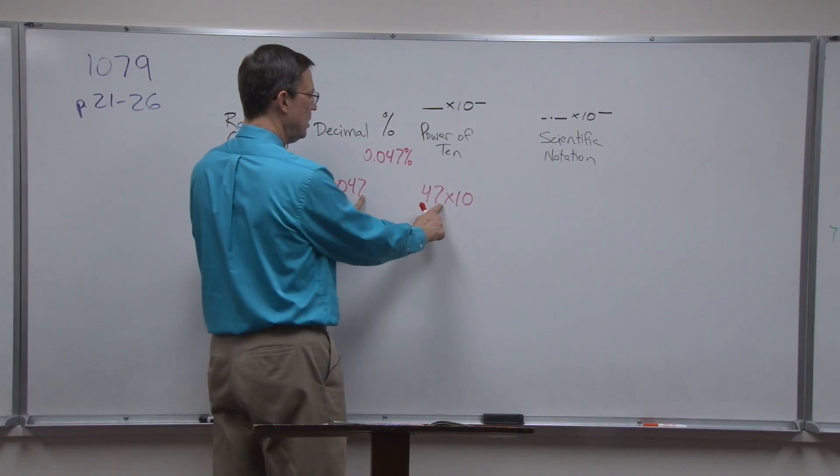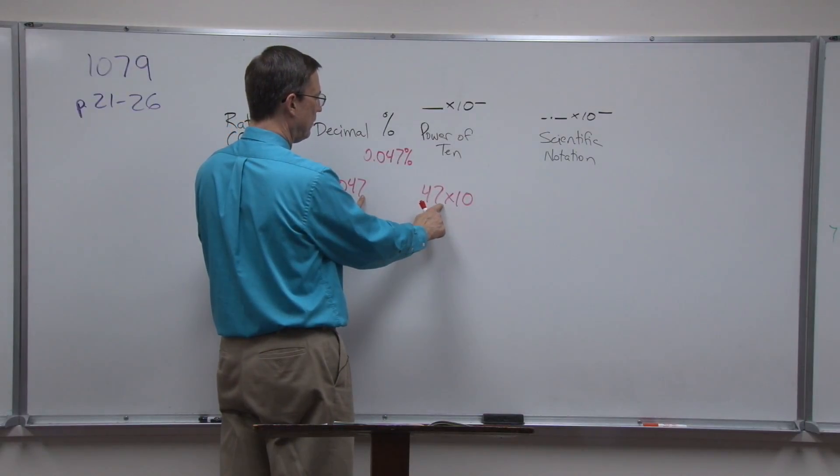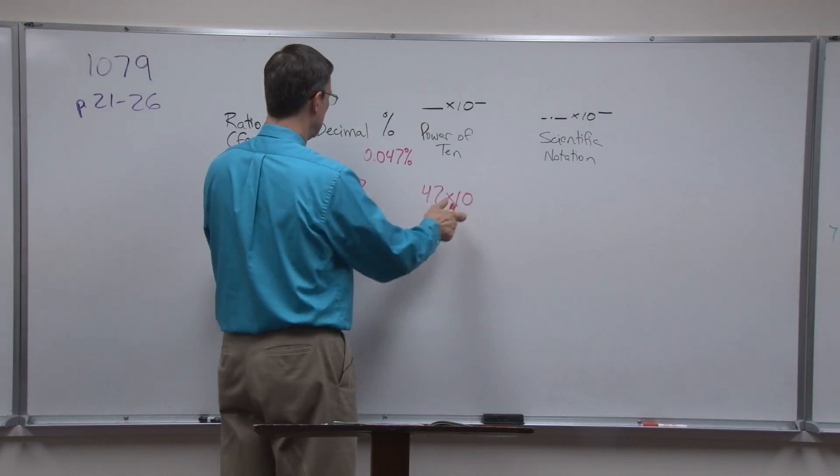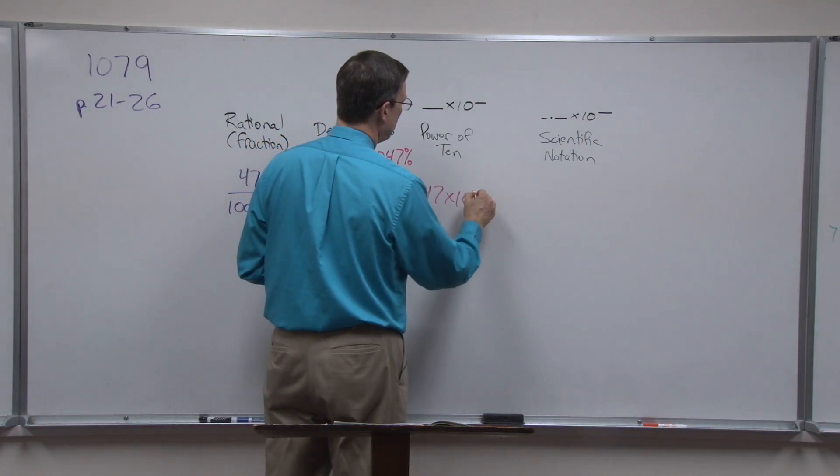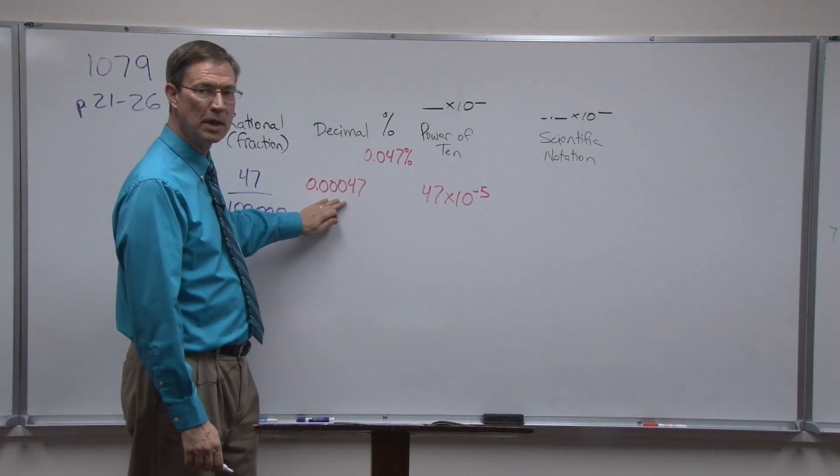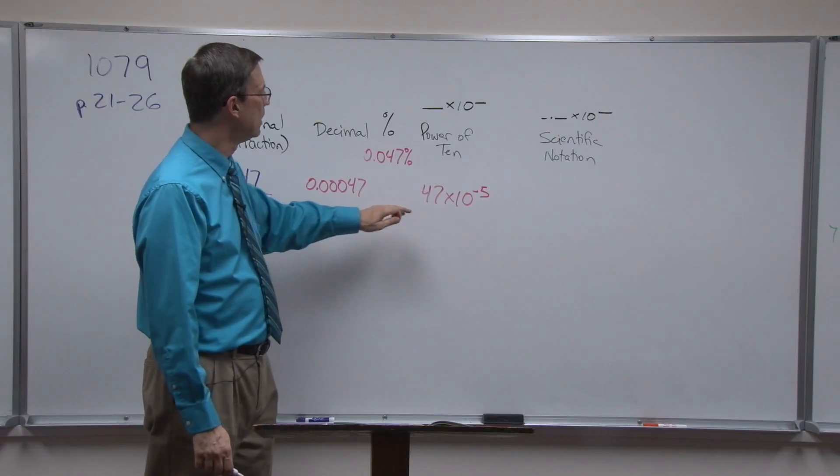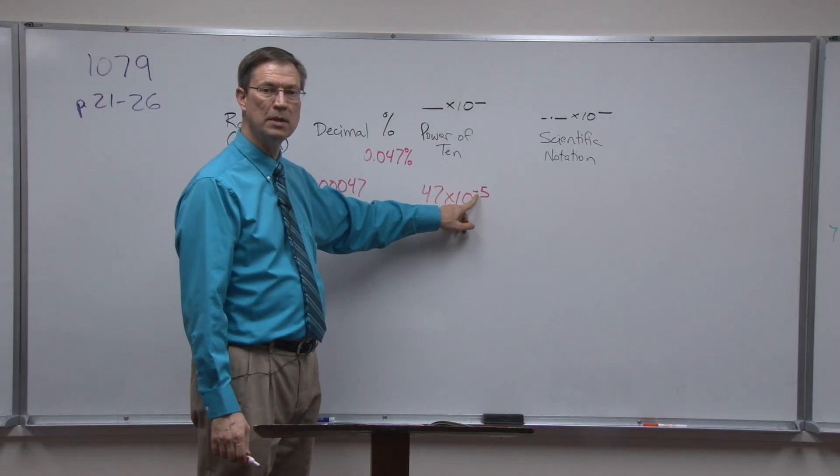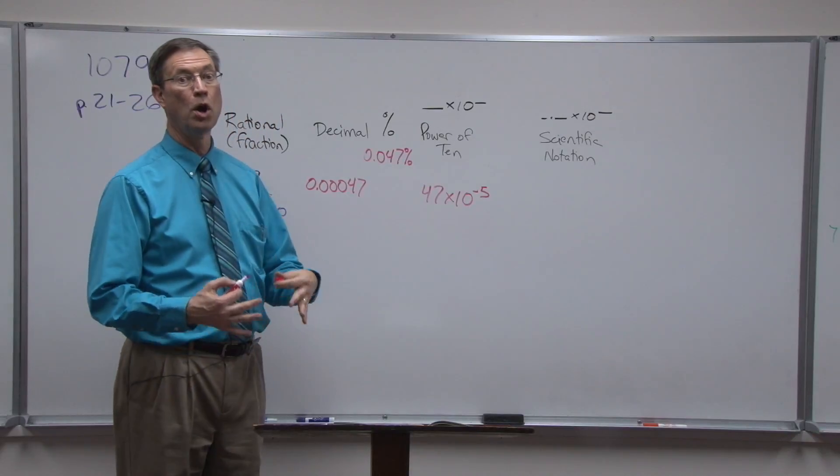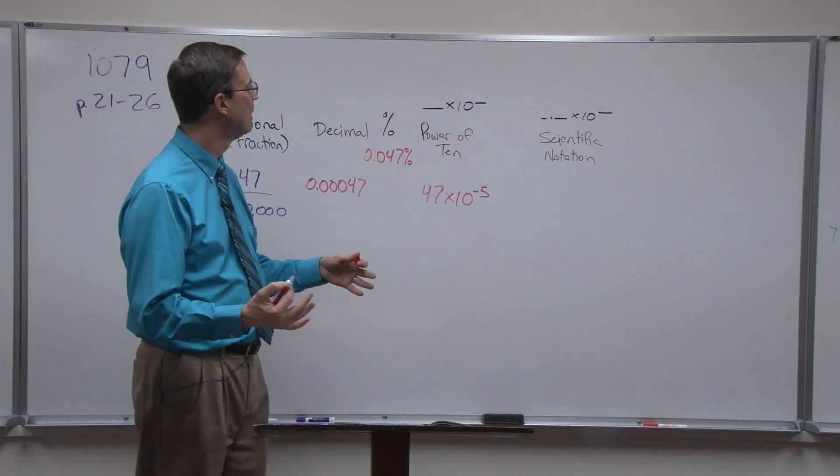Say okay, how many places did I have to move the decimal to get it from here to here, at the end of the number 47? Notice it would move five times. But this number here, the decimal number, is less than one, so we always use a negative exponent. We use the positive exponents if we're dealing with large numbers. So for these small numbers less than one, the decimal is a negative.